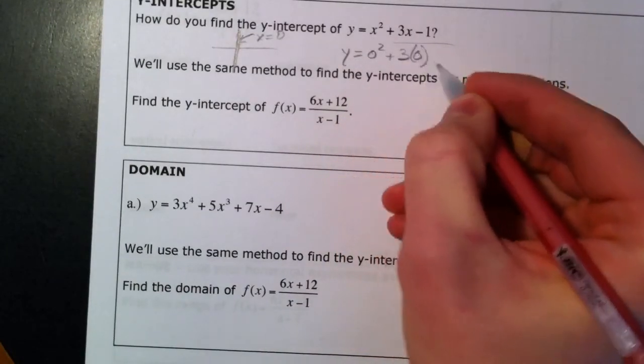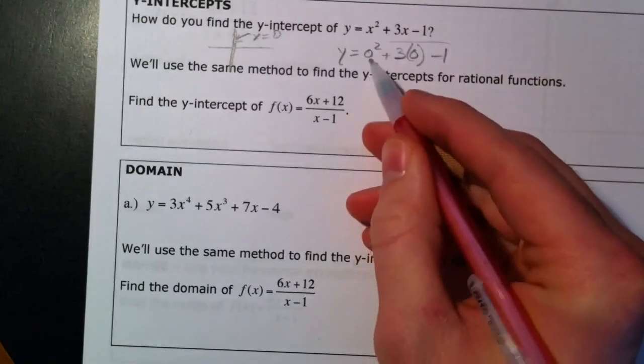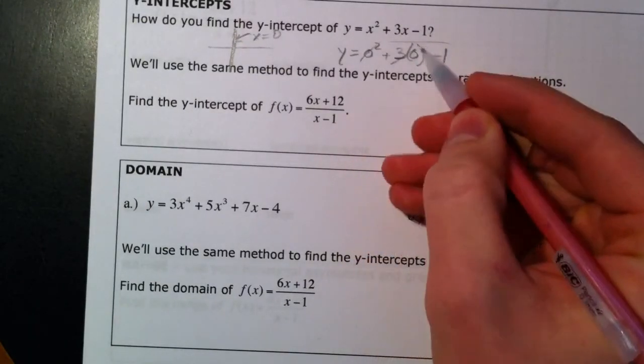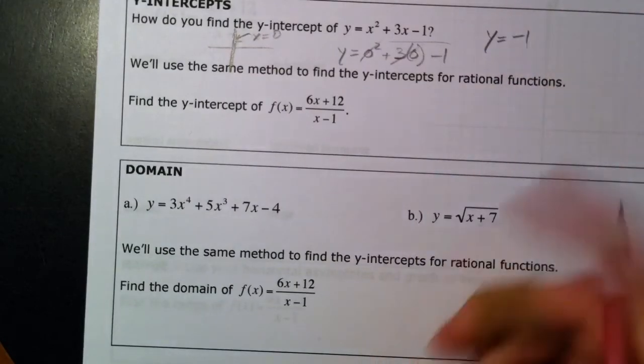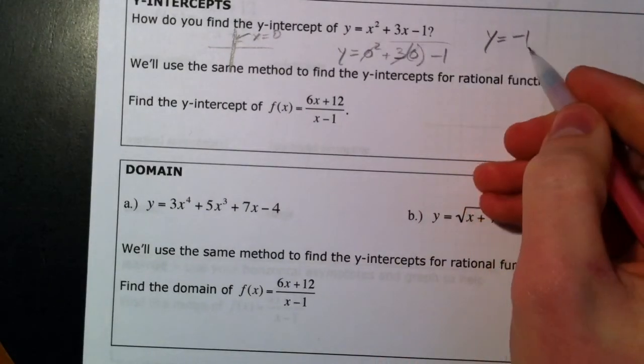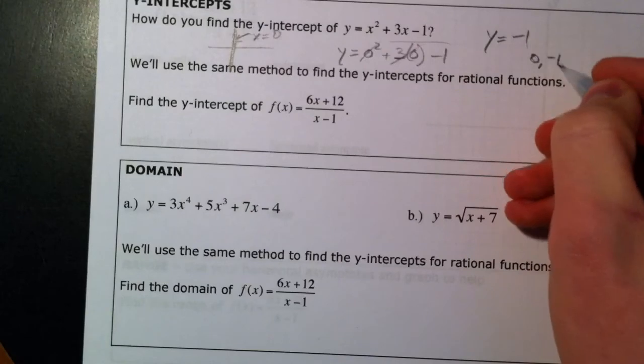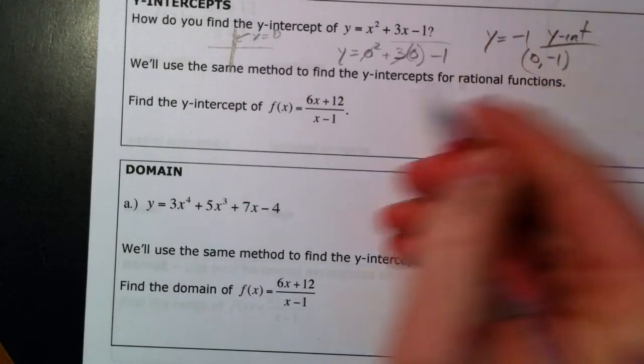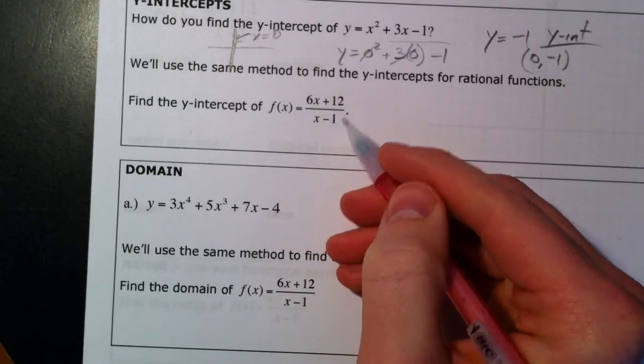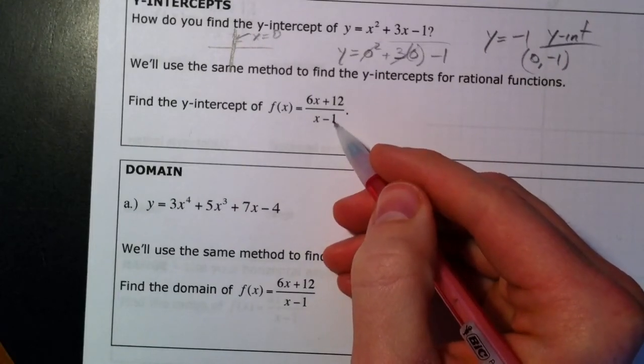All right. So y equals negative 1 is your y-intercept. So 0, negative 1 is your y-intercept. Now, back to our original rational function that we were using on the other one.